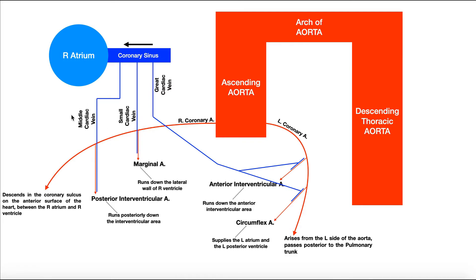Let's start with the middle cardiac vein, which is middle or intermediate in size. It's important to remember that this one is on the posterior aspect of the heart, which makes sense given the artery it drains blood from — the posterior interventricular artery. So if you remember the middle cardiac vein is on the posterior aspect of the heart, it shouldn't be too hard to remember that it drains the posterior interventricular artery.